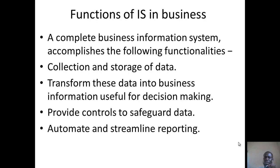It transforms this data into business information useful for decision making. After it has collected all the data it requires, it transforms them by processing to let the manager know which item is moving faster, which item is still delaying — you can predict the market trend using this data. And then, it provides controls to safeguard data. Business systems also provide the necessary controls so that data is safeguarded — that means security, physical and using software infrastructure to actually safeguard information.